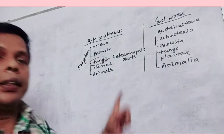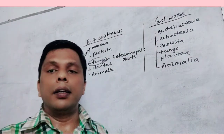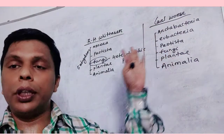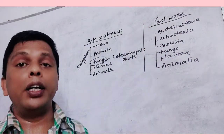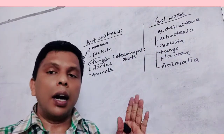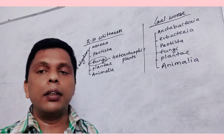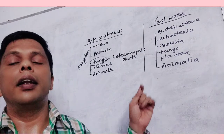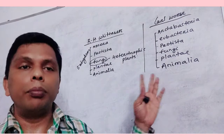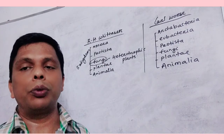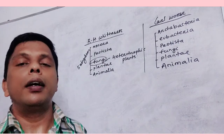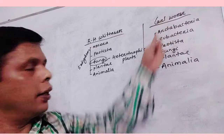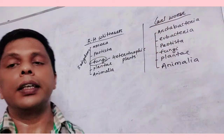This six kingdom system was given by Carlus, and it was divided into three domains: Archia, Eukarya, and the Protista group.